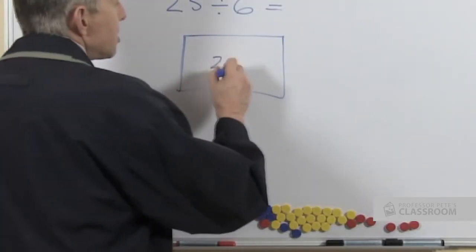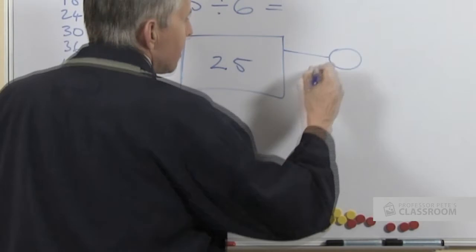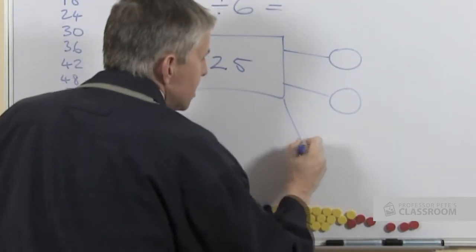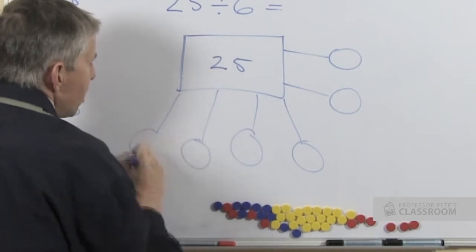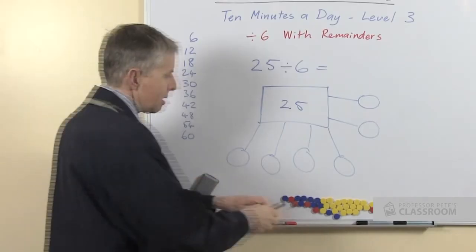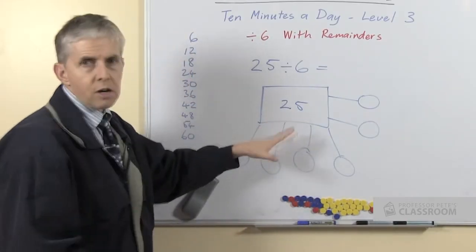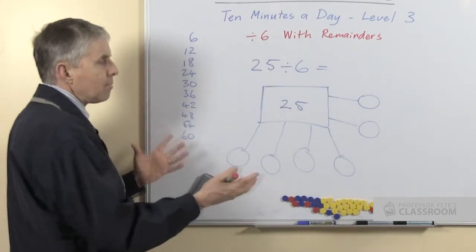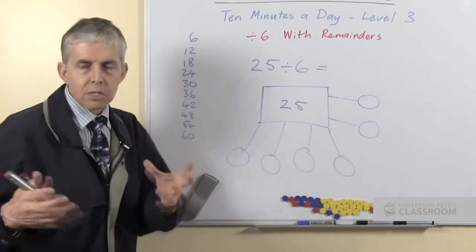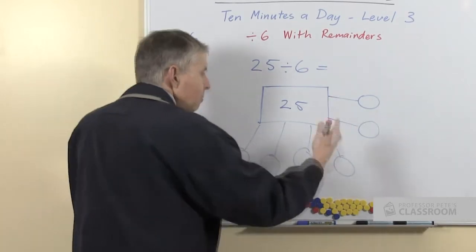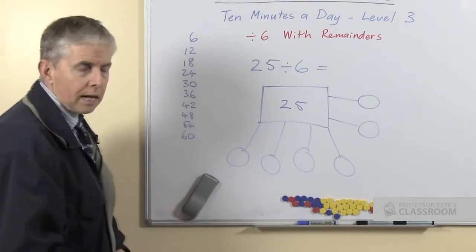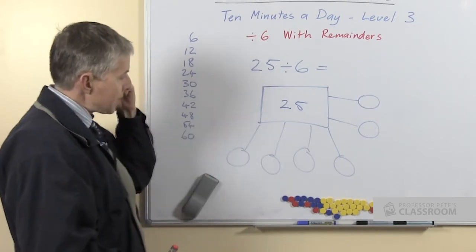One way you could do this visually is to do something like this. Now I'm just basically making this up, but this would be a way of visually representing this idea that we have 25 something and we're sharing it among 6 groups or 6 people, and each one will receive the same amount. How many will they have?